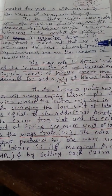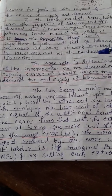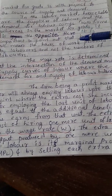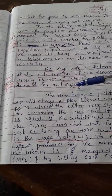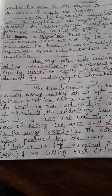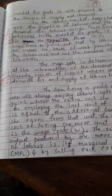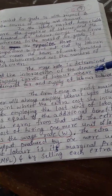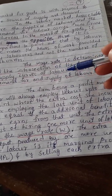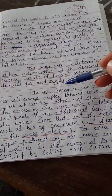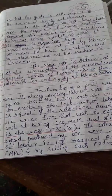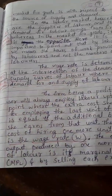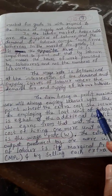It is important to note that by 'labors' we mean the hours of work provided by workers, not the number of laborers. The wage rate is determined at the intersection of the demand and supply curve of labor — where the demand for and supply of labor meet in the labor market. This is a one and two marks question.